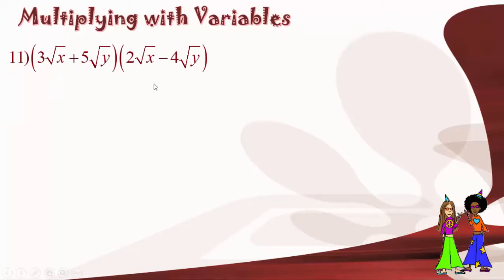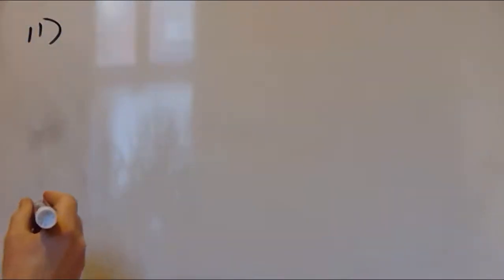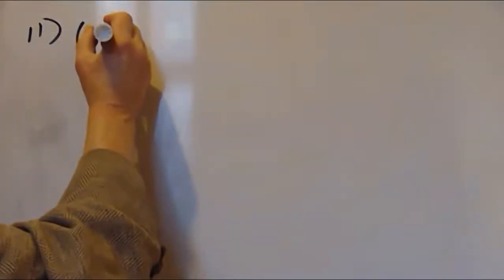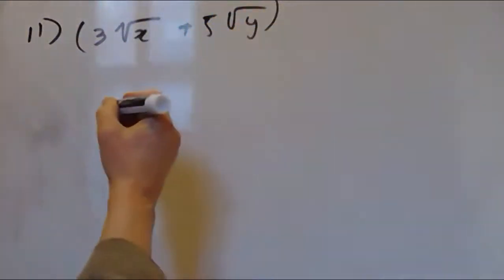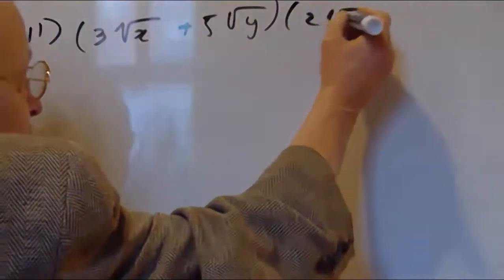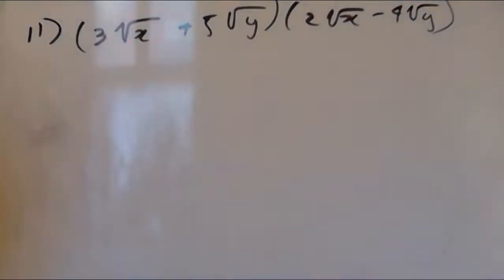In example number 11, we're asked to multiply 3 square root of x plus 5 square root of y times 2 square root of x minus 4 square root of y. Even though we have variables in number 11, it's the same process as with regular numbers. We use the distributive property, or FOIL.